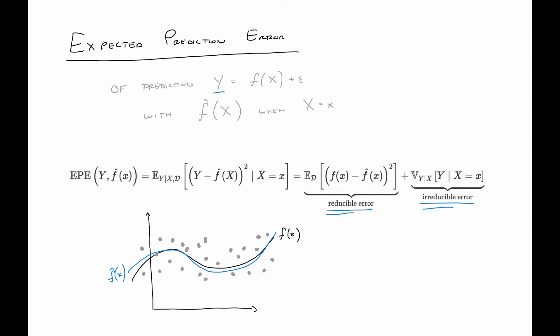The reducible error is what we have some control over — we can do a better job getting our estimate to better match the truth. This quantity is what we call the mean squared error, or MSE. In this formulation, the irreducible part is the variance of epsilon.